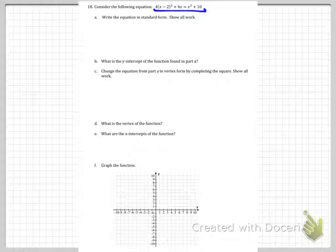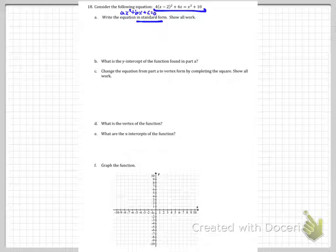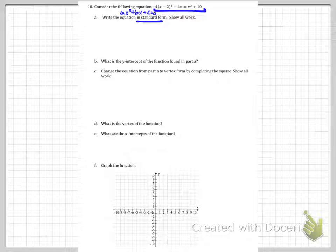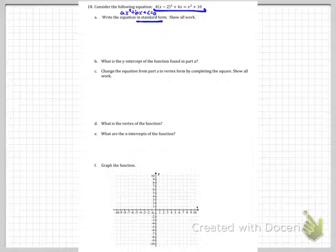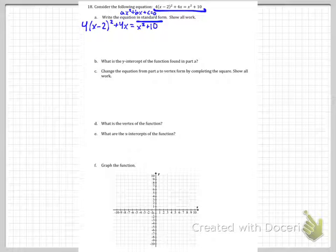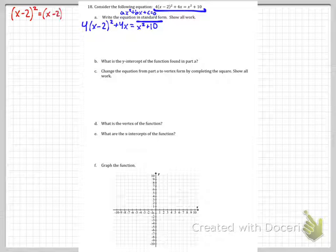First of all, they give us this big equation and say write the equation in standard form. Remember that standard form is ax² + bx + c = 0. So I'm going to get rid of all the parentheses, combine like terms, and move everything to one side. Well, first of all, we have to remember that (x-2)² is (x-2) times (x-2).